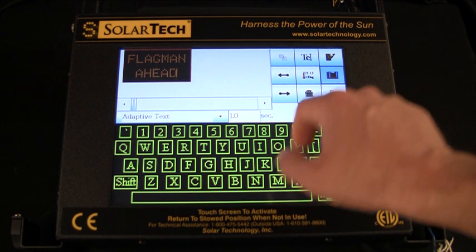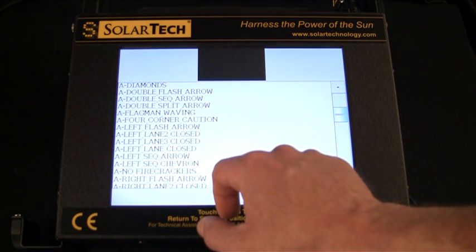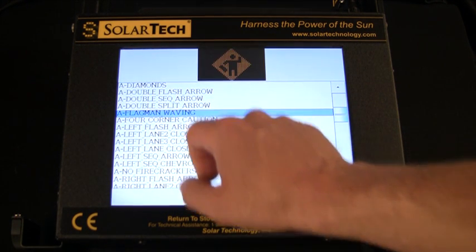To enter the graphic portion of your sequence, press the library key. Choose the image you wish, and then press OK.